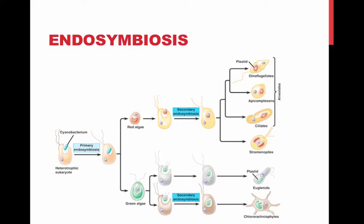There is now considerable evidence that much protist diversity had its origins in endosymbiosis. Mitochondria evolved by endosymbiosis of an aerobic prokaryote. Plastids evolved by endosymbiosis of a photosynthetic cyanobacterium.